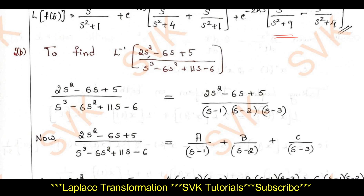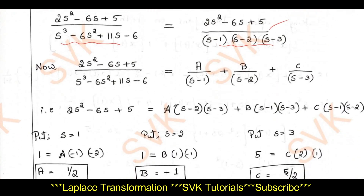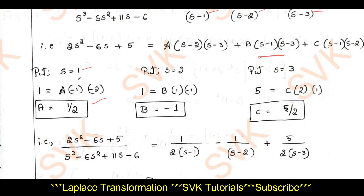For the next problem, finding the inverse Laplace of the given expression whose denominator is a cubic equation, we convert it to factors. Using a calculator, the roots are −1, −2, −3, so the factors are (s+1)(s+2)(s+3). We resolve into partial fractions: A/(s+1) + B/(s+2) + C/(s+3). Putting s = −1 gives A = 1/2.